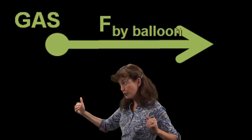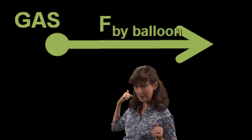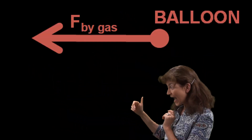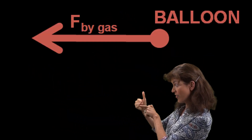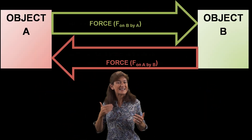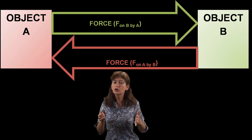Because they act on different bodies, and each force affects only the body that it acts on. The balloon forces the gas that way — that makes the gas accelerate that way — it has no effect directly on the balloon. The gas forces the balloon that way — that accelerates the balloon that way — it has no direct effect on the gas. So the two forces in an action-reaction Newton's third law pair act on different bodies, so they cannot cancel one another's effects out.